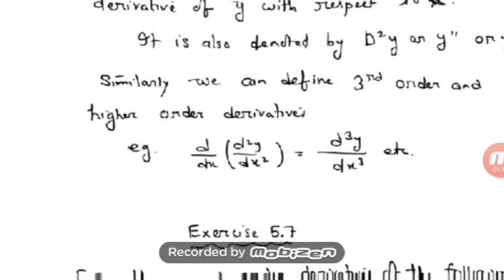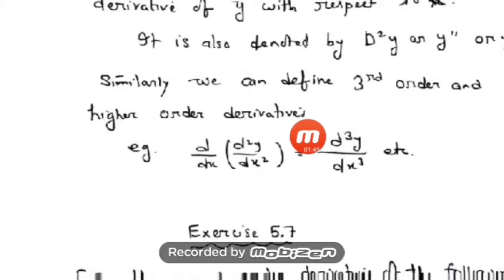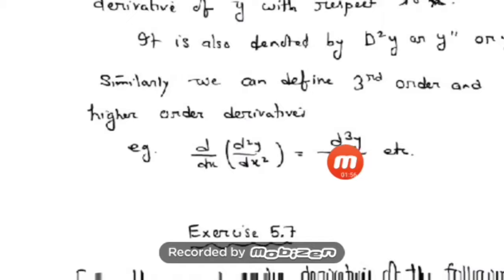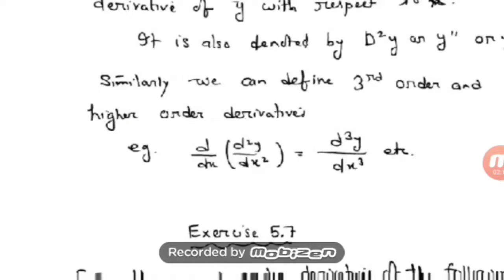Similarly, we can define the third order and higher order derivatives. Suppose you want to find the third order derivative: you take the derivative of the second order derivative, that is d/dx of (d²y/dx²), which is symbolically written as d³y/dx³, and so on. If a question asks for the second order derivative, all the methods used earlier for the first order derivative can be applied here.